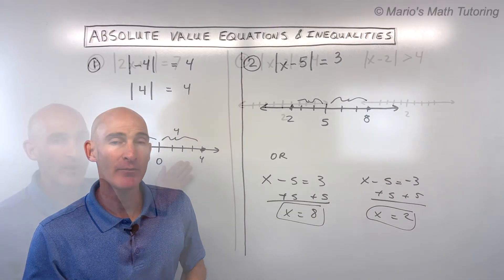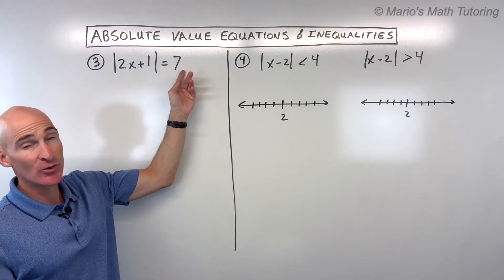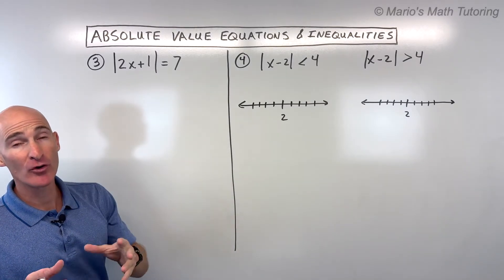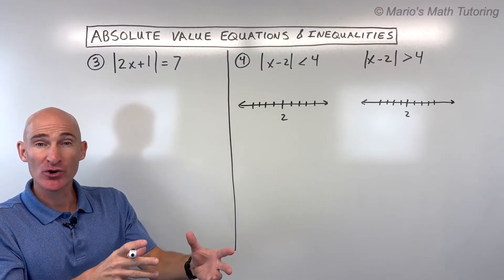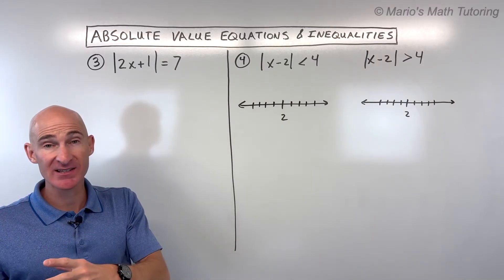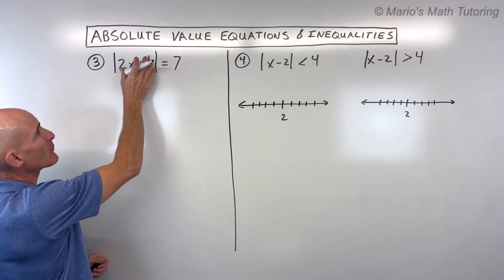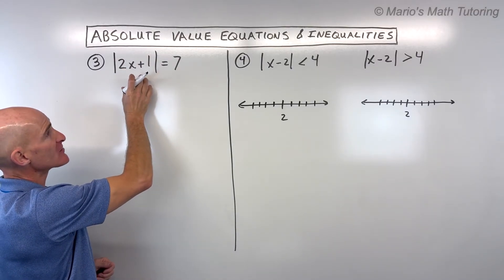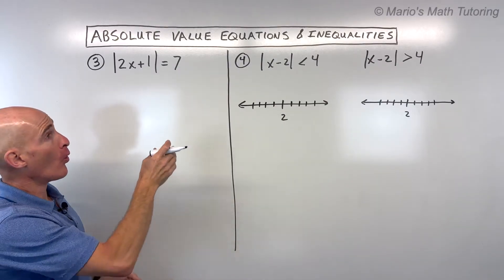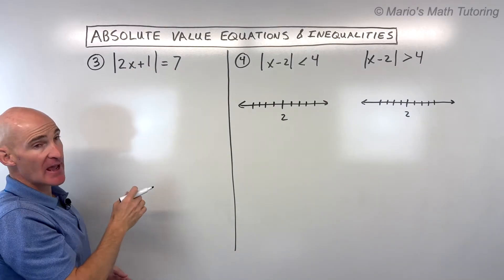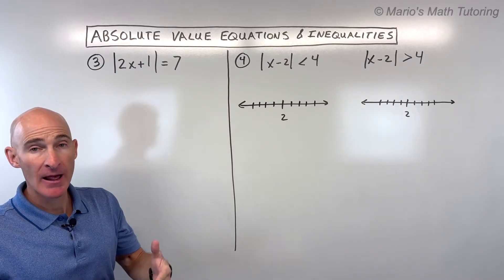For number three, we have the absolute value of 2x plus 1 equals seven. In this problem we use the technique of saying whatever was inside originally could have been positive seven — the absolute value would then give us seven — or it could have been negative seven, which when we take the absolute value also equals seven. You can think of this as being seven units to the right of zero, positive seven, or seven units to the left of zero, negative seven.